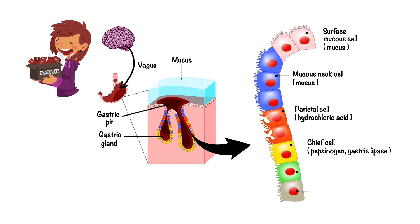Enterochromaffin-like cells produce histamine that helps to induce the production of acid. And G-cells produce peptide hormone gastrin that is responsible for regulation of gastric activity.